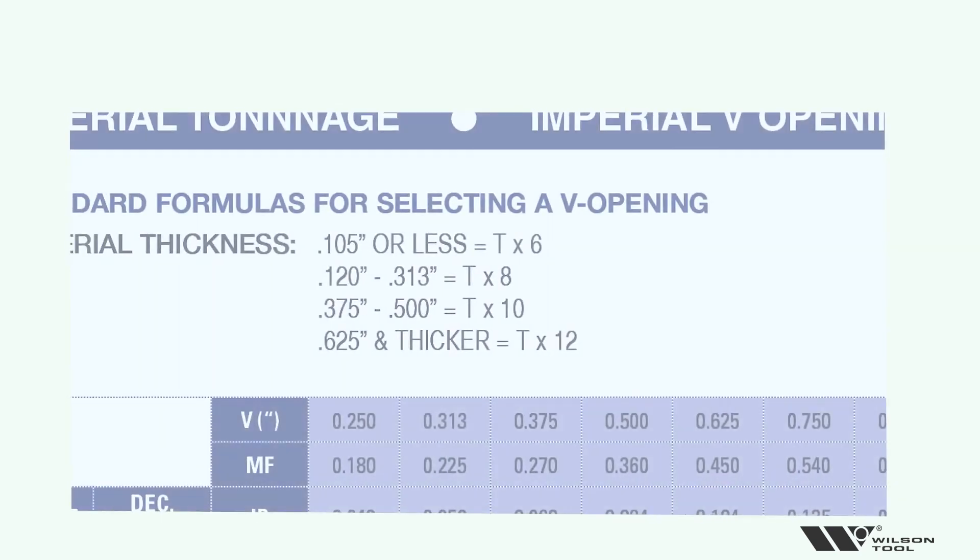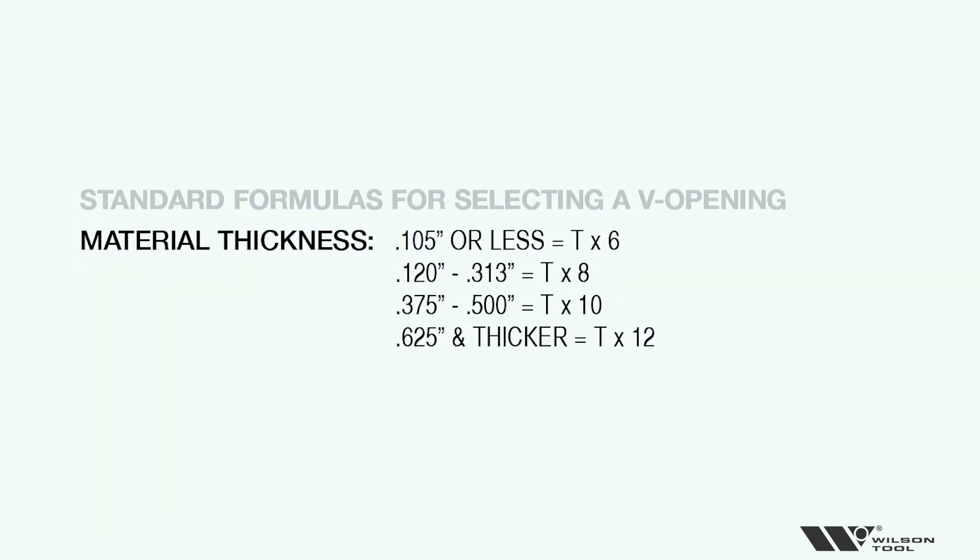If you go to the left hand side top page, we have formulas up there. And those formulas are dictating the V opening being called out as the ideal V opening in the chart. So if you see up to 105 material, we have T times 6, and that's your V opening in the shaded box. But as I get thicker, we go T times 8, T times 10, T times 12.